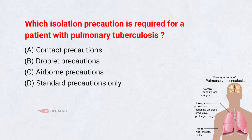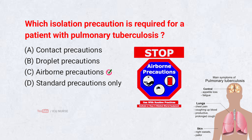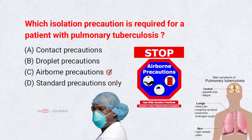Which isolation precaution is required for a patient with pulmonary tuberculosis? A. Contact precautions. B. Droplet precautions. C. Airborne precautions. D. Standard precautions only. Correct answer: C. Airborne precautions. Tuberculosis spreads through airborne particles, so an N95 mask and a negative pressure room are required.